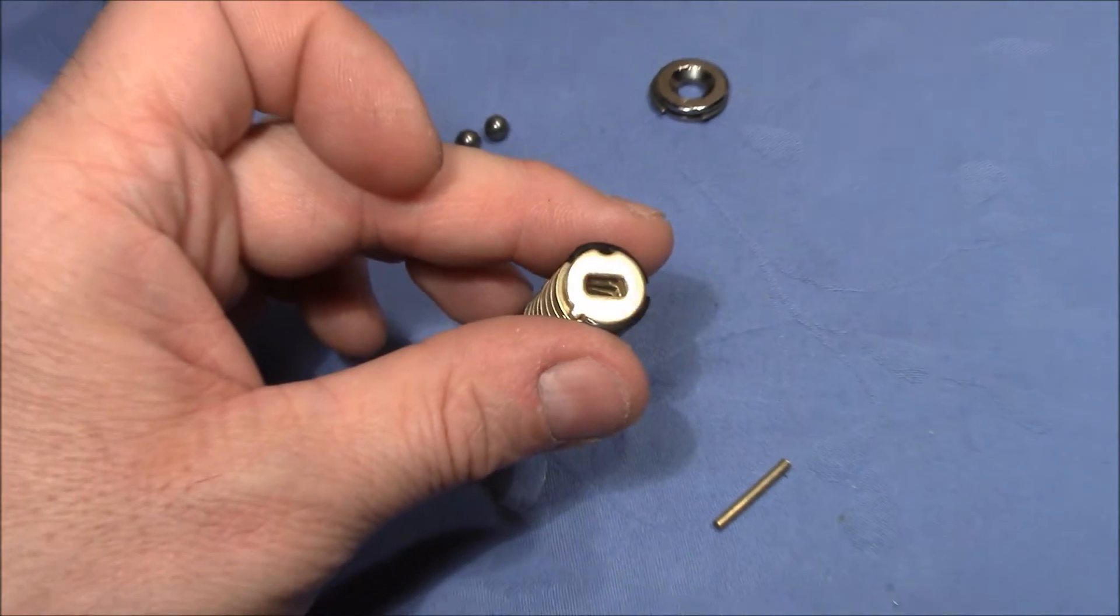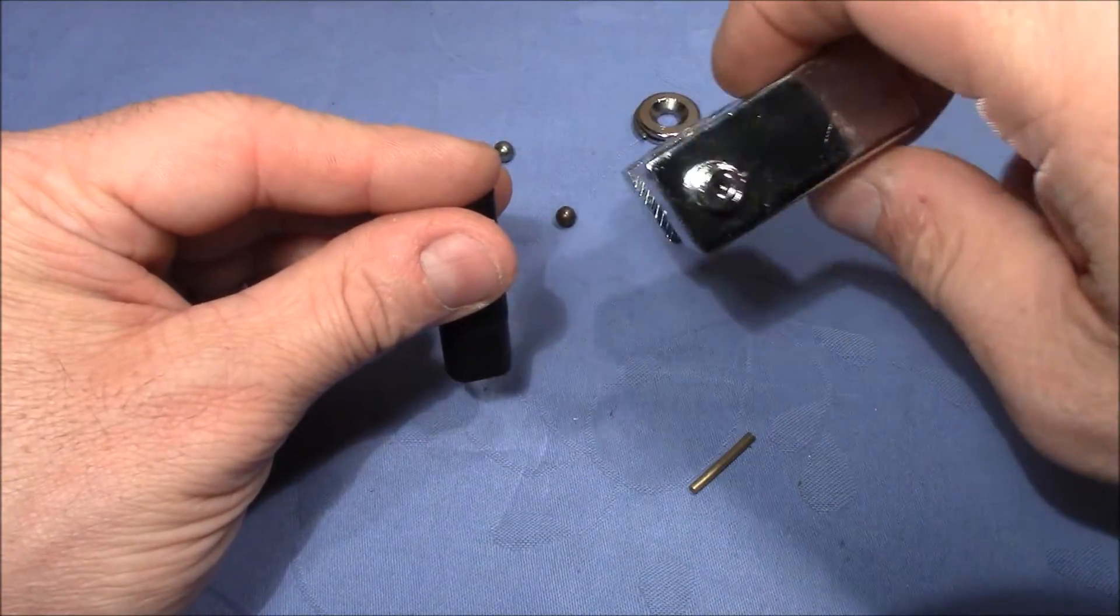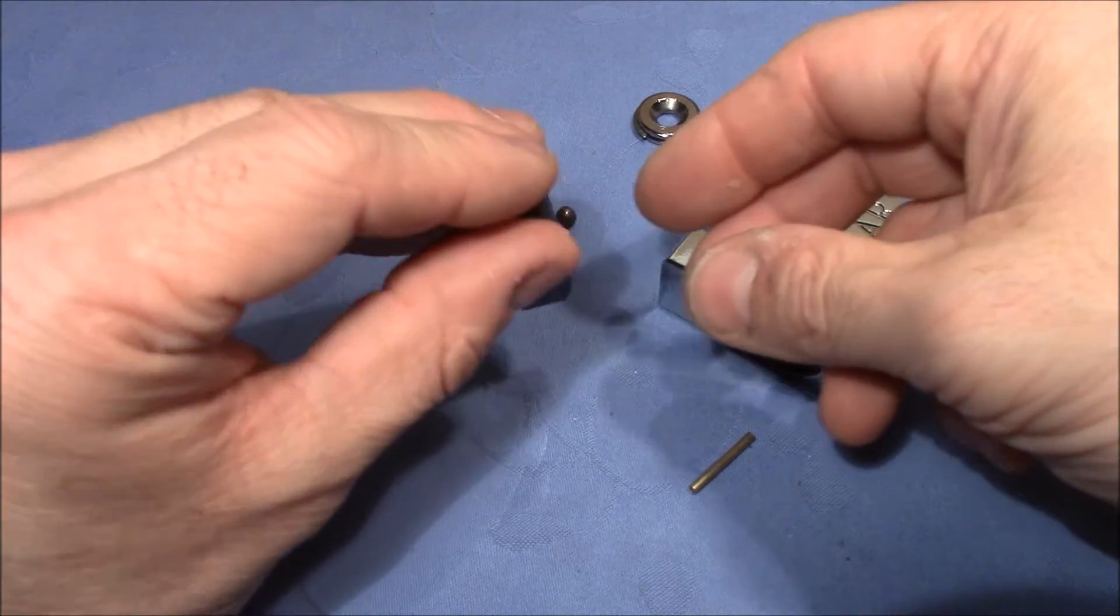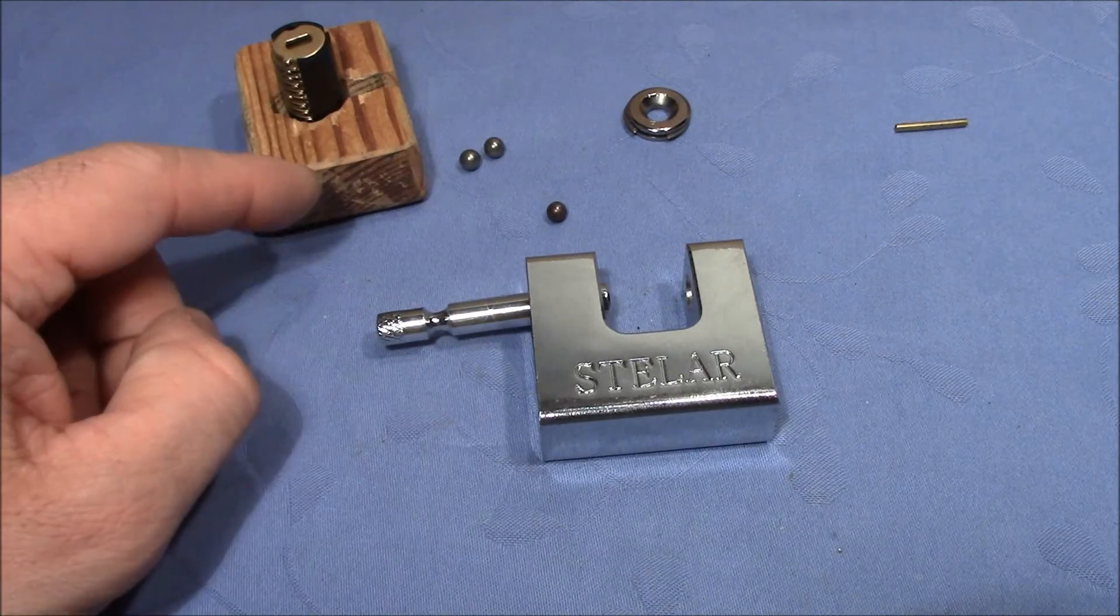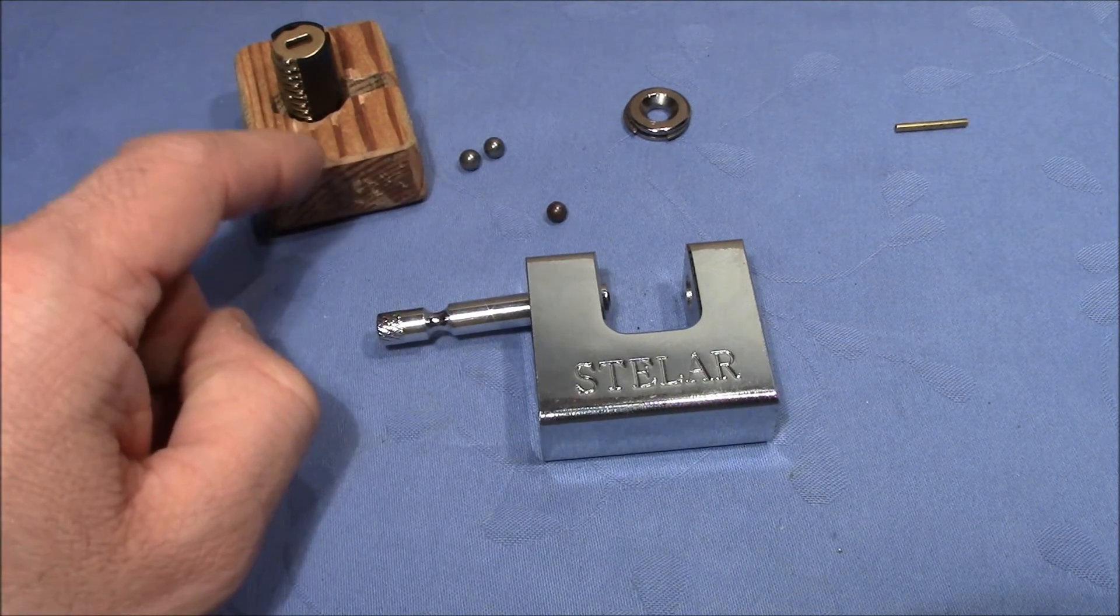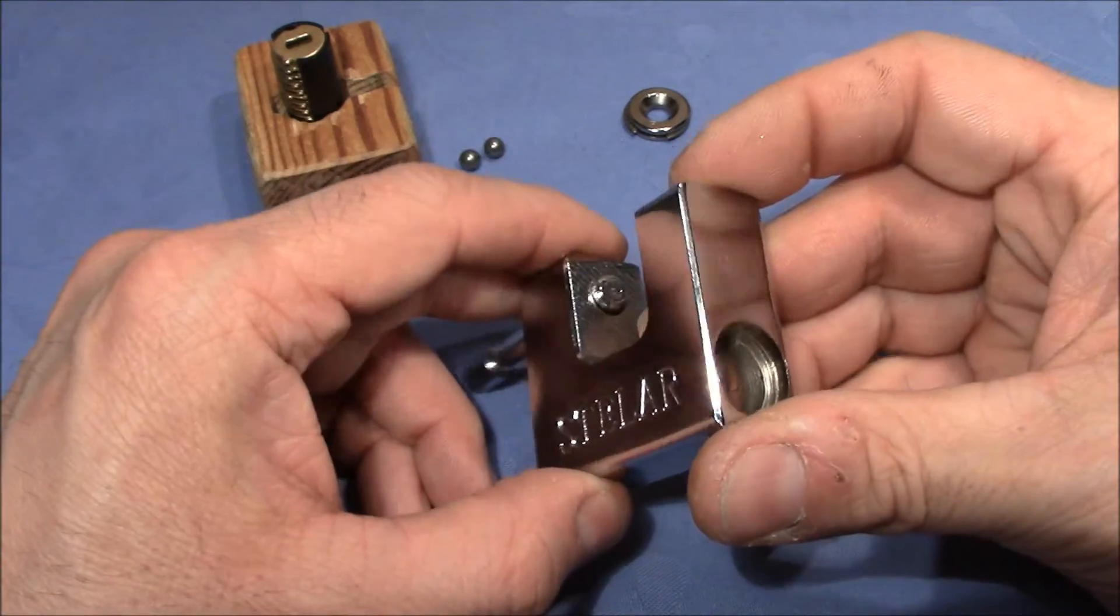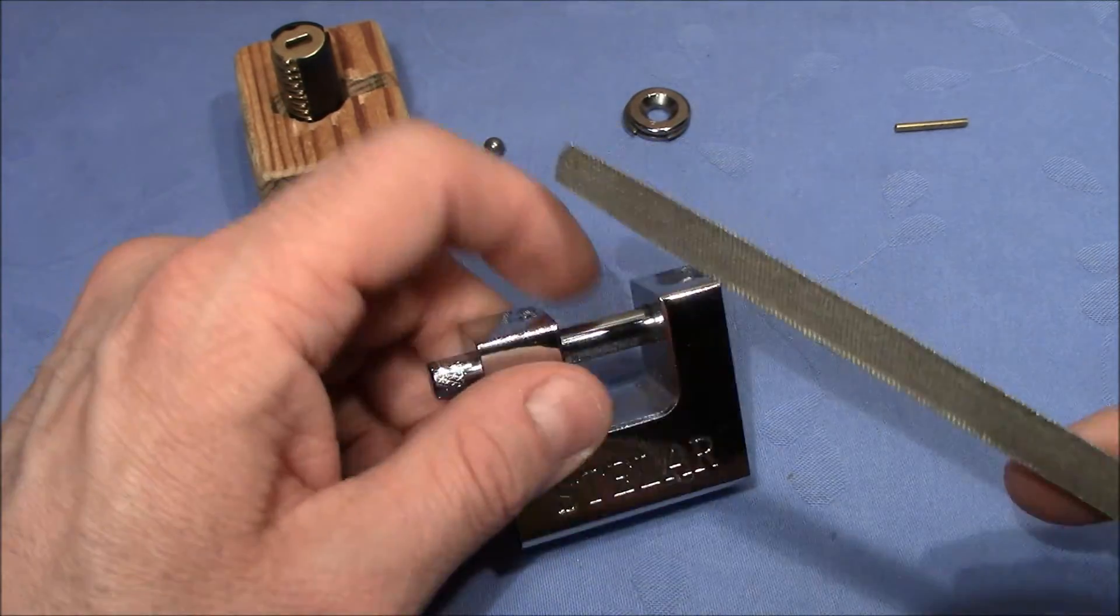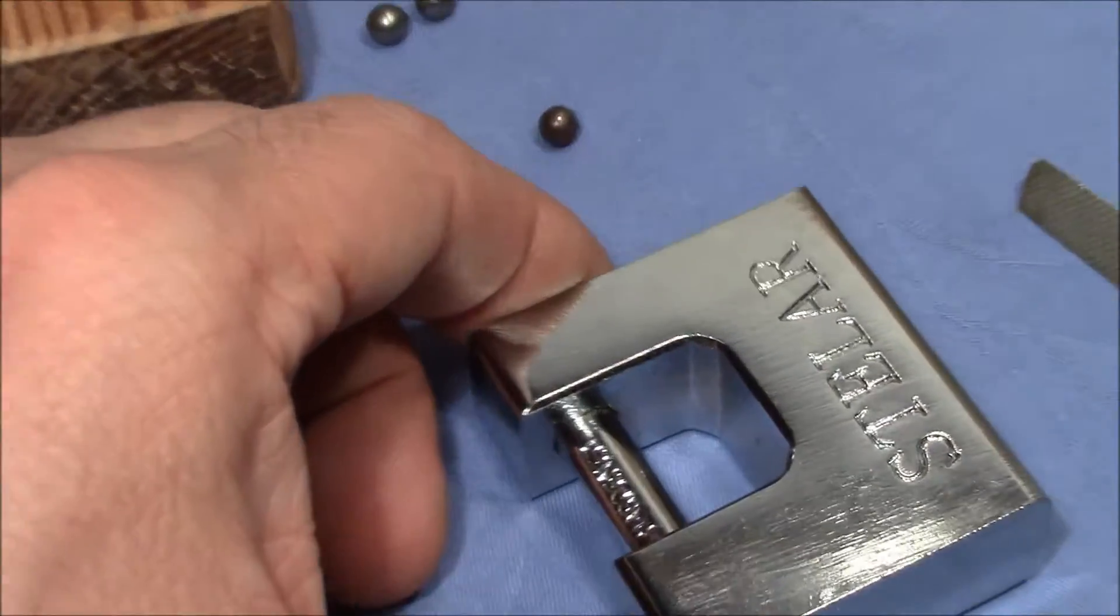And now what remains to do is to see if the lock body and the shackle are really hardened. I need to somehow store this safely, and then I will be back in a second. You can see I found a secure way to store the discs. Now what remains to do is to see if it's really hardened, the body and the shackle. Therefore I use my file and see how deep the grooves are that this file leaves. Maybe that hurts someone, but it's all in the name of science.